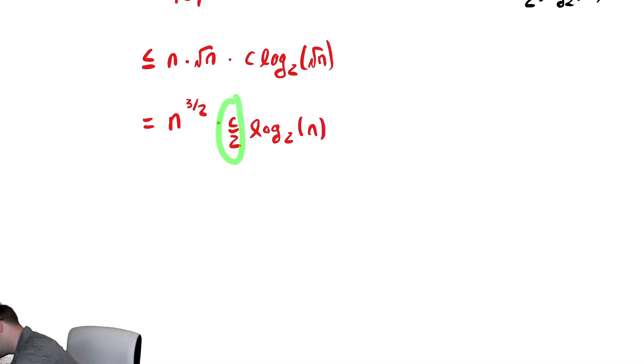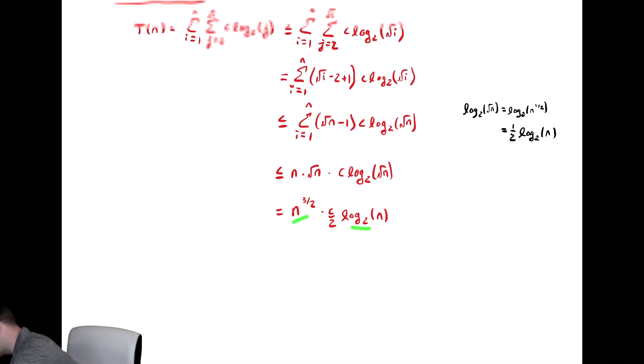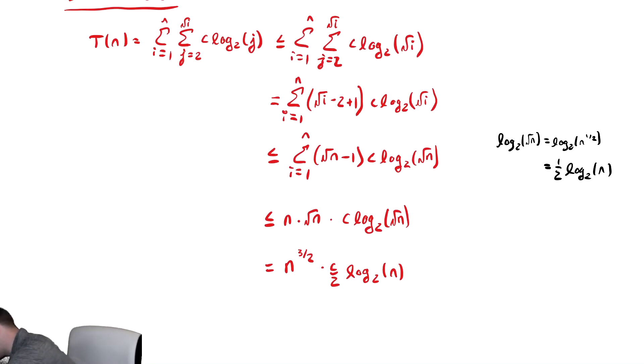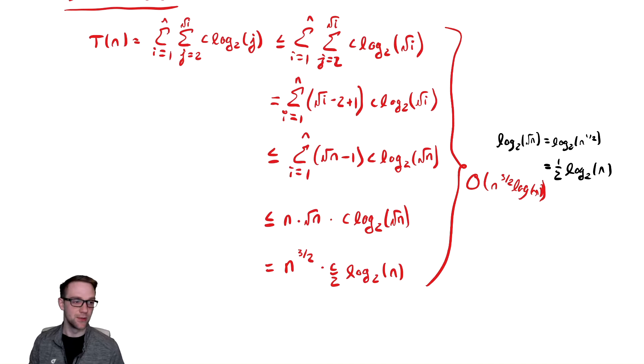So this is some number c over two times n to the three halves log of n. So all the stuff I didn't read here is enough to tell me that I am in big O of n to the three halves log n. Notice the log base doesn't matter for standing complexity, so we did not include it. So n to the three halves log n for the upper bound.